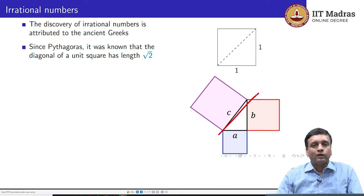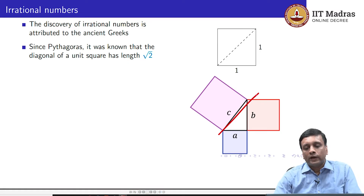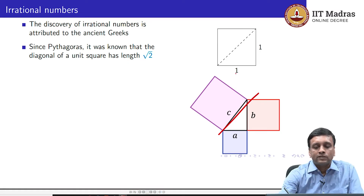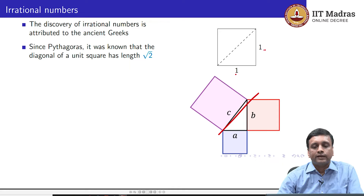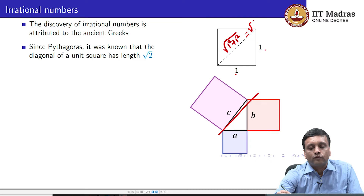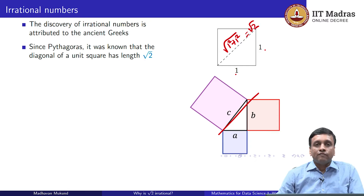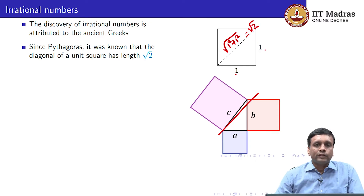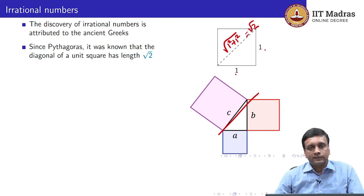So from this, knowing a and b, you can compute c. In particular, if you draw a square which has 1 and 1 as its two sides, then the hypotenuse must be the square root of 1 squared plus 1 squared, which is the square root of 2. So you can actually physically construct a length of square root of 2 by drawing a unit square, assuming you can measure out a unit length.